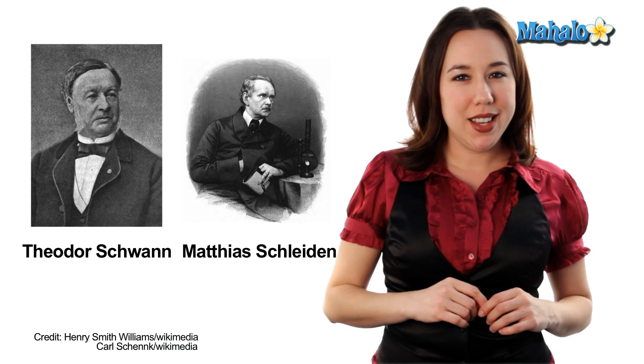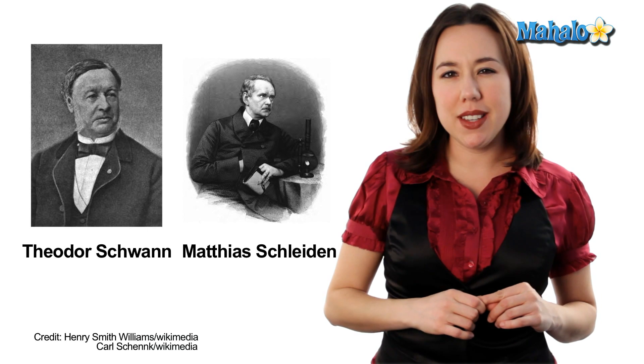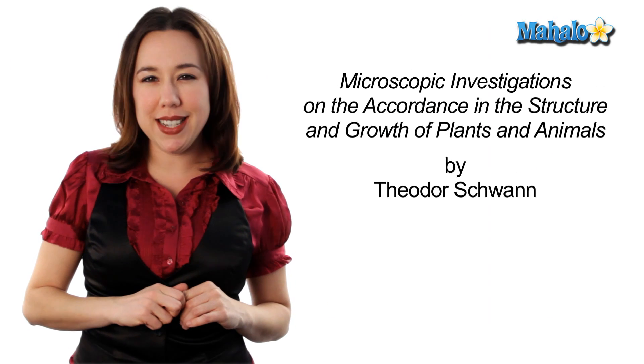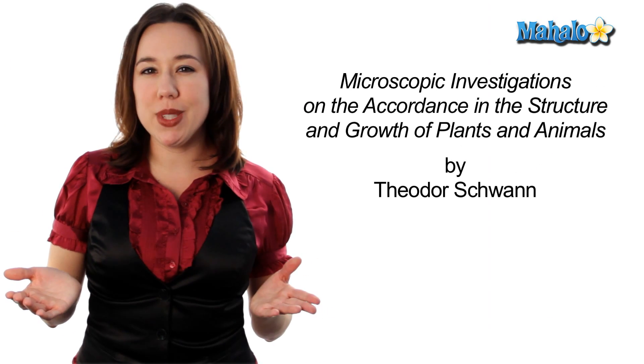In 1838, Theodor Schwan and Matthias Schleiden were enjoying some after-dinner coffee talking about their studies on cells. It has been suggested that when Schwan heard Schleiden talk about the nuclei he was observing in his plant cells, he was struck by the similarity of the things he was seeing in his animal cell studies. The two scientists rushed back to Schwan's lab to take a look at his slides. The very next year, Schwan published his book on his findings on both plant and animal cells.